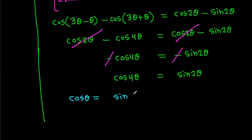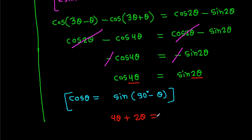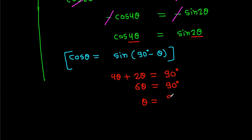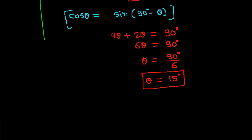Now we know that cos theta equals sin(90 degrees minus theta). So cos 4 theta equals sin 2 theta means 4 theta plus 2 theta equals 90 degrees, giving 6 theta equals 90 degrees. Therefore theta equals 90 degrees over 6, which is 15 degrees.